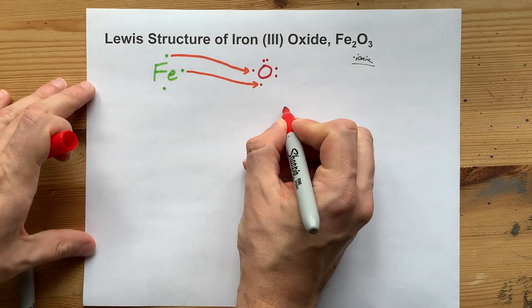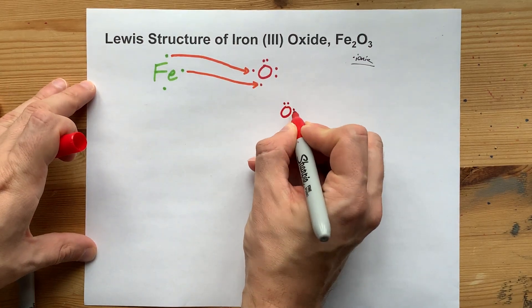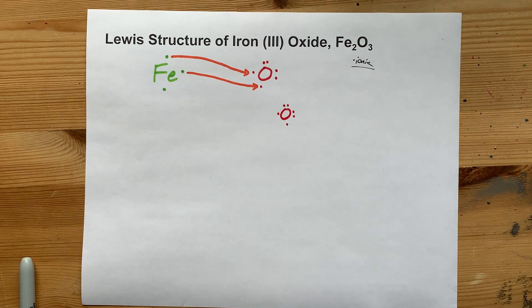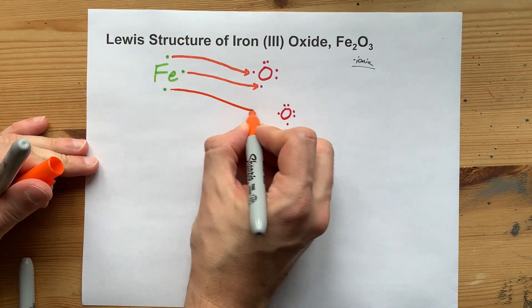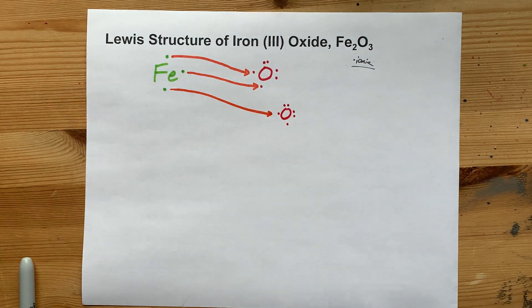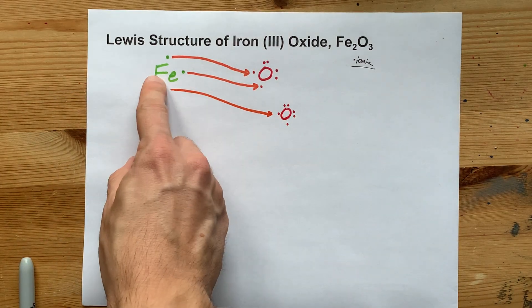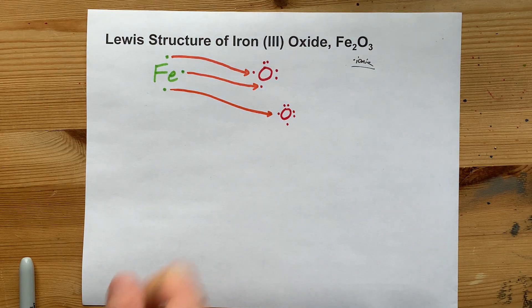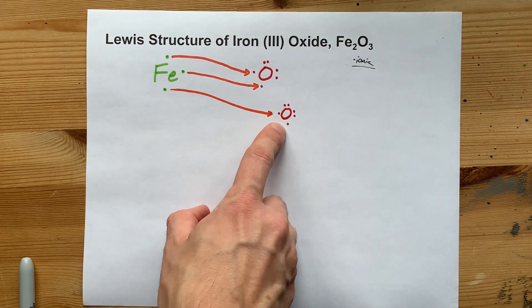So, if you bring in a second oxygen with its 6 valence electrons, iron can give its extra electron away to that new oxygen. Now, this iron has given away all its electrons, which is what metals want to do, but this oxygen still doesn't have a full 8.